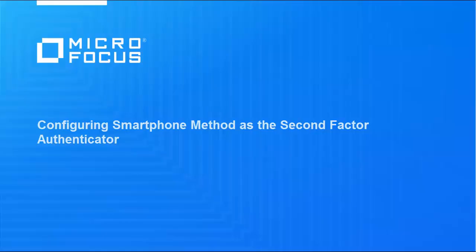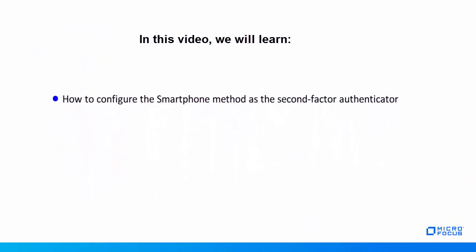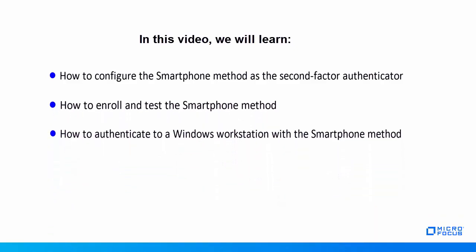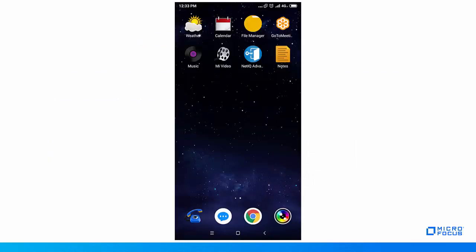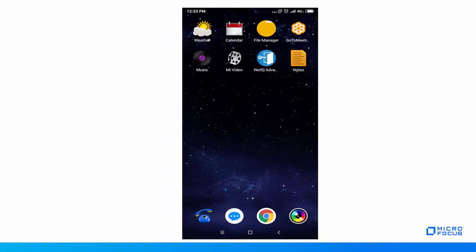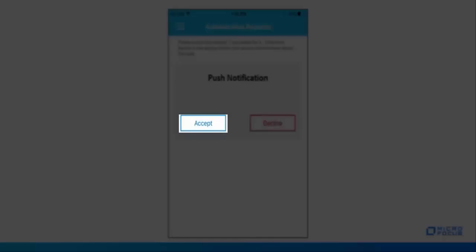Hello and welcome to this Micro Focus demonstration video. This video demonstrates how to configure the smartphone method as the second factor authenticator. We will learn how to configure the smartphone method as second factor authenticator, how to enroll and test the smartphone method, and how to authenticate to a Windows workstation with the smartphone method. The smartphone method helps users authenticate using the NetIQ Advanced Authentication app. When a user initiates authentication, a push notification is sent to the app and the user can tap Accept to authenticate successfully.